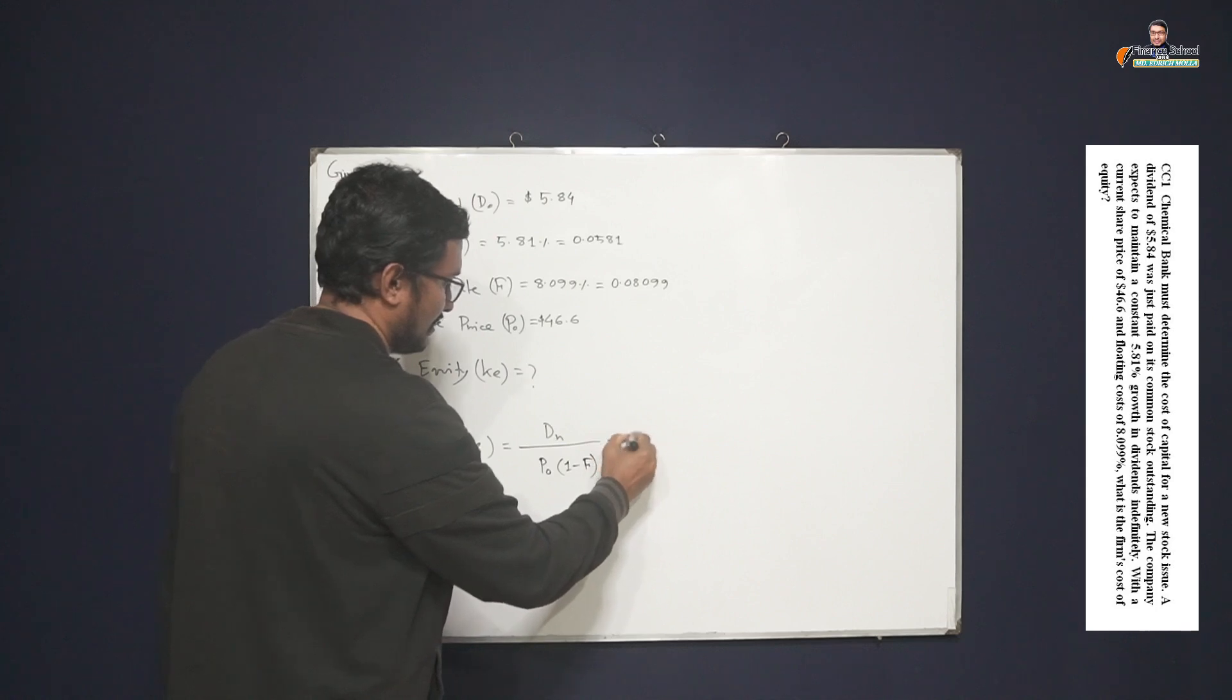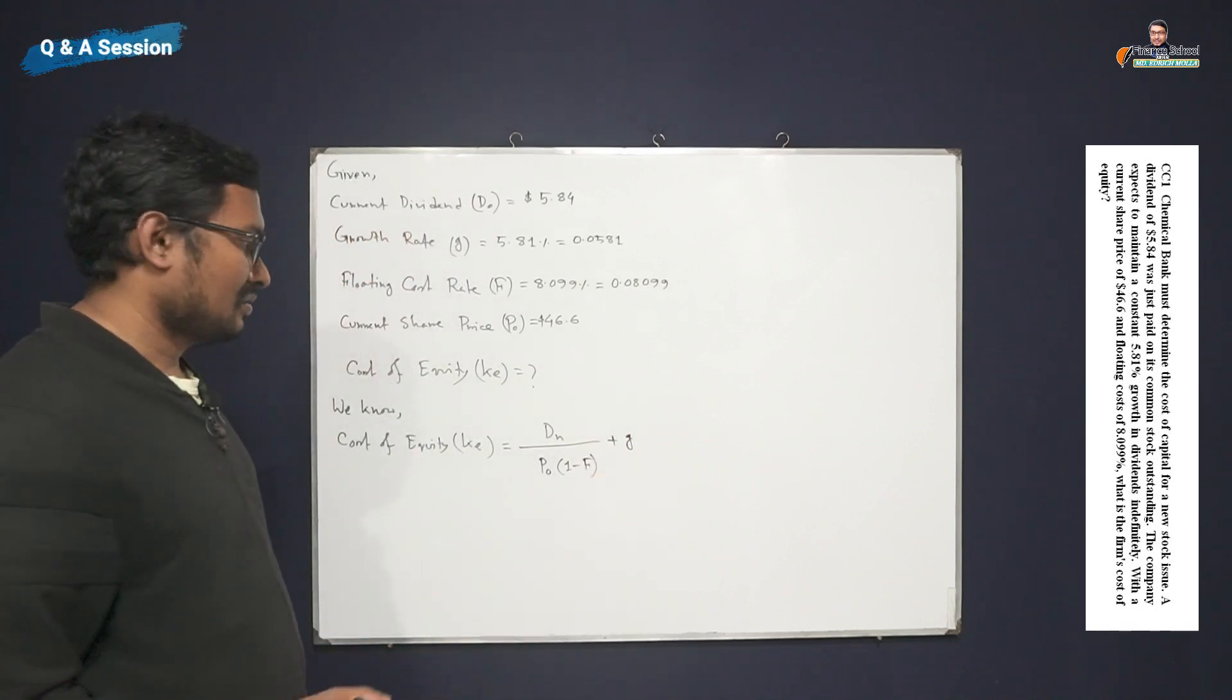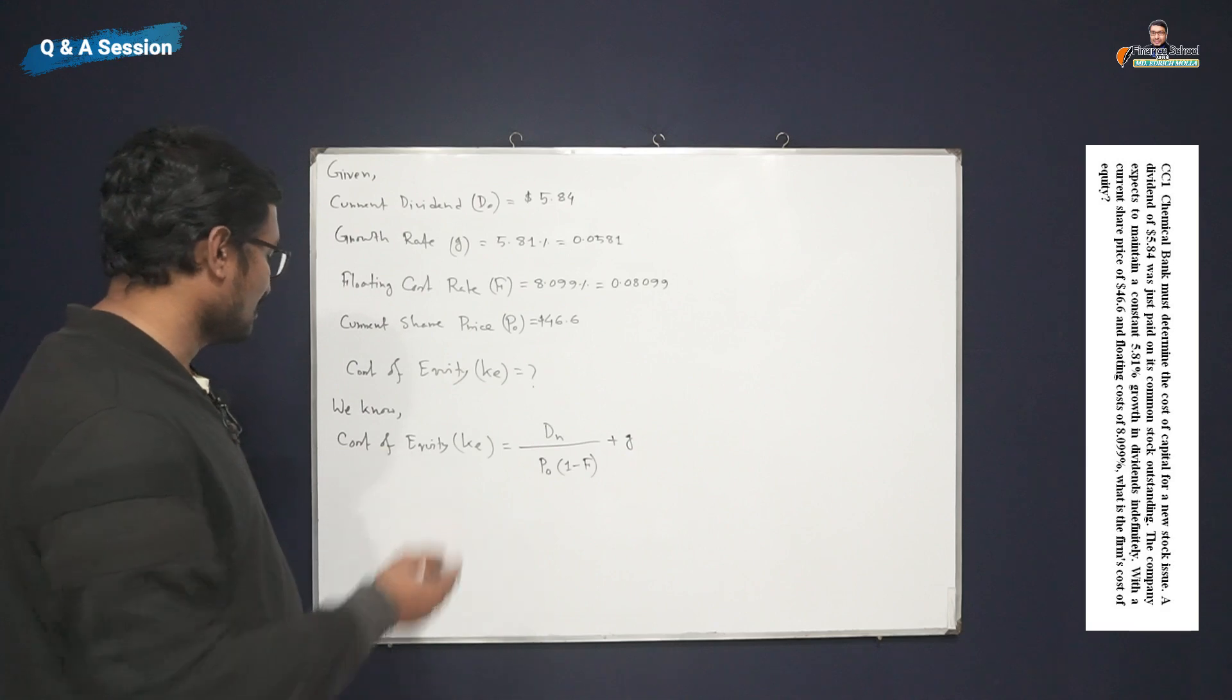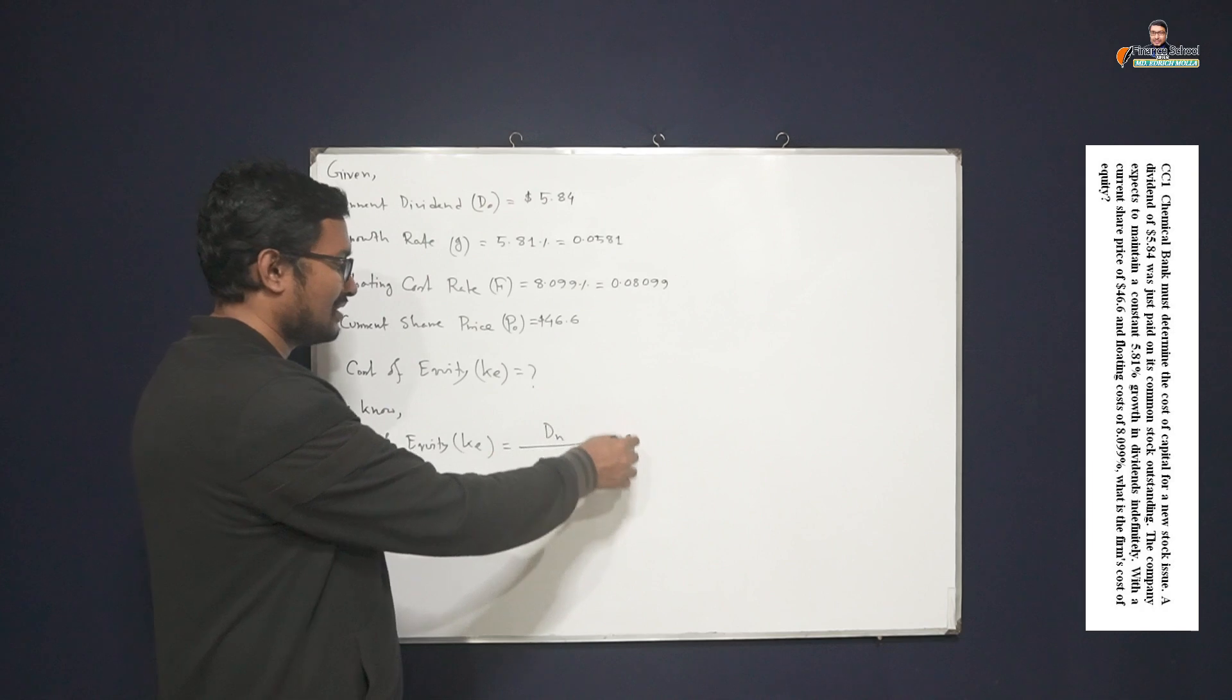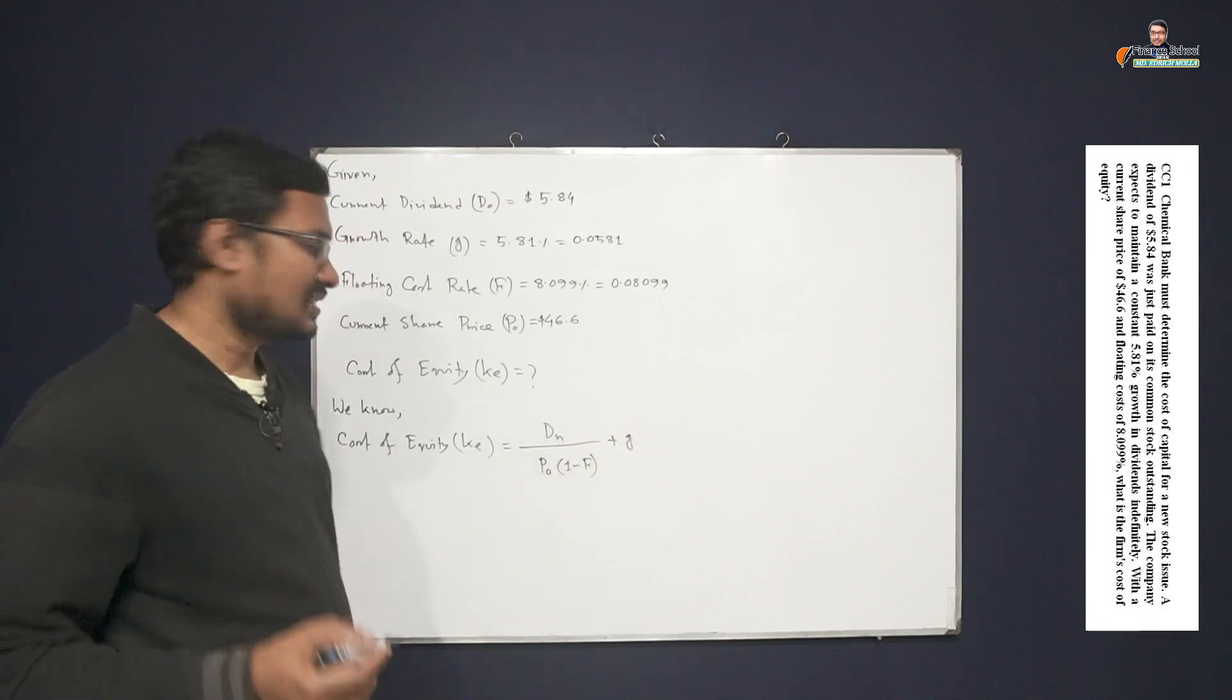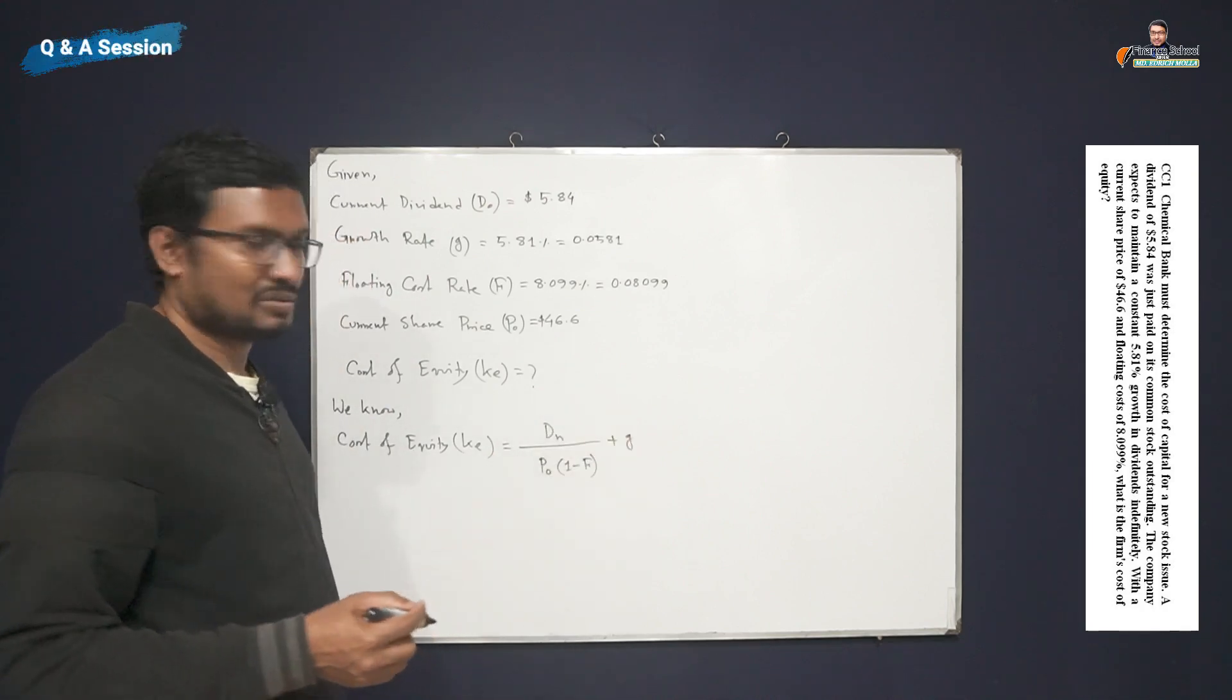Plus g. So this should be the formula. In percentage, we have to consider here to show the results in percentage. If you want, we can multiply this formula by 100, otherwise we can just show the results in percentage at the conclusion.